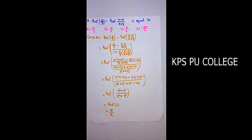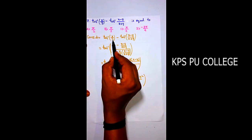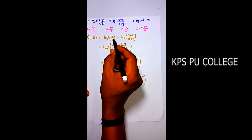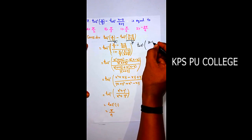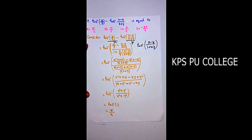Question 17 (MCQ): tan⁻¹(x/y) - tan⁻¹((x-y)/(x+y)) equals: option (a) π/2, option (b) π/3, option (c) π/4, option (d) -3π/4. Using the formula tan⁻¹(x) - tan⁻¹(y) = tan⁻¹((x-y)/(1+xy)), combine the two terms with LCM y(x+y).